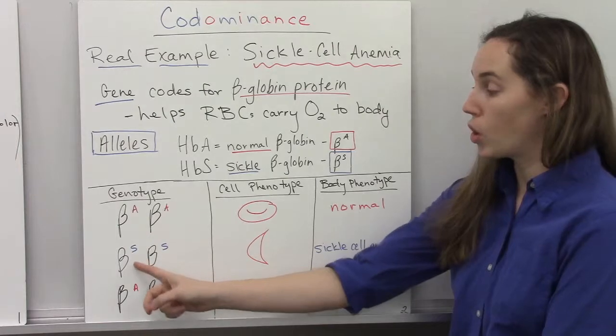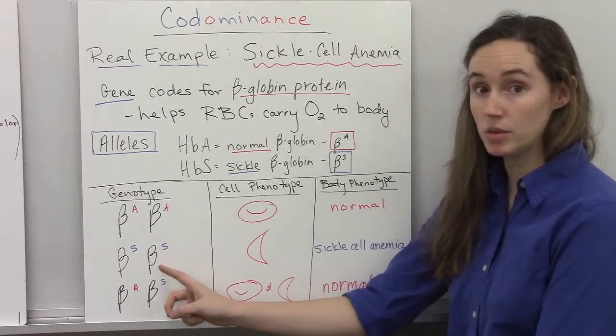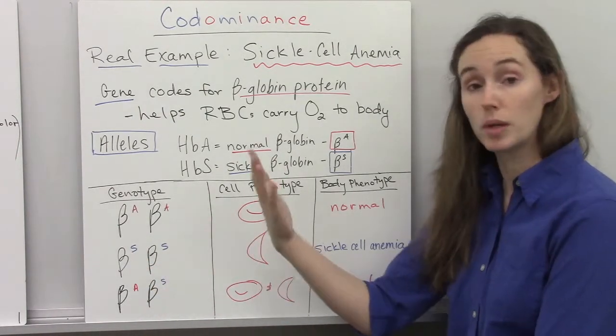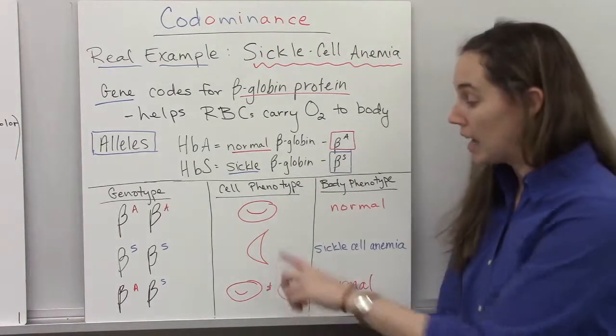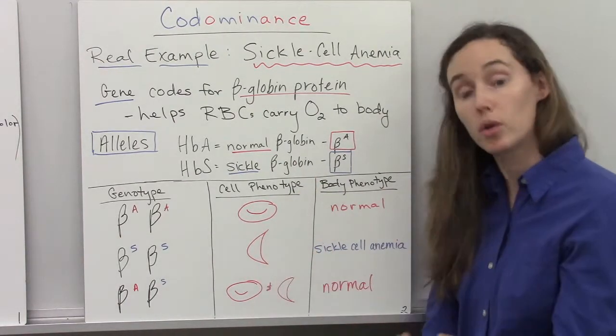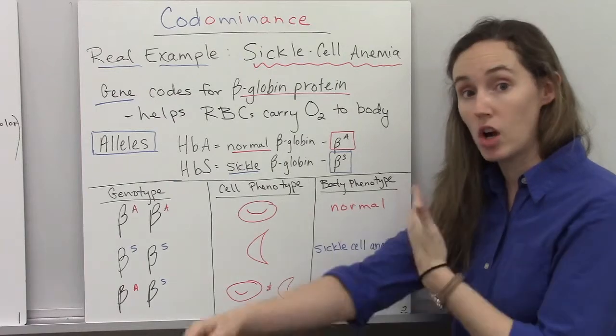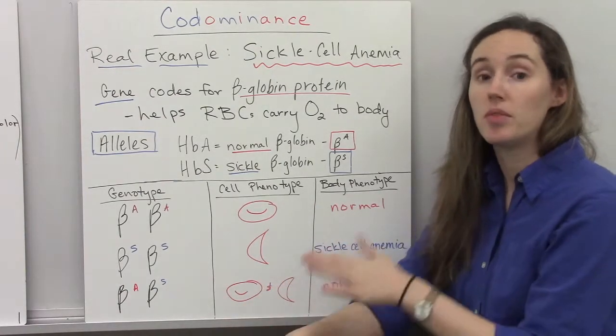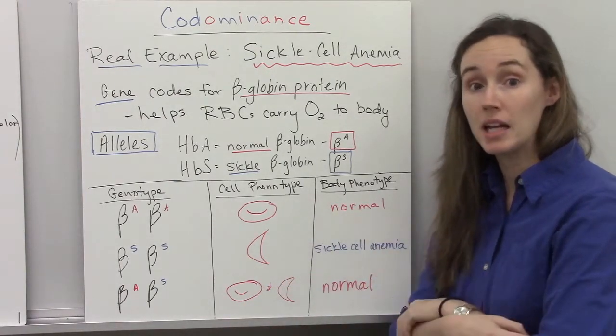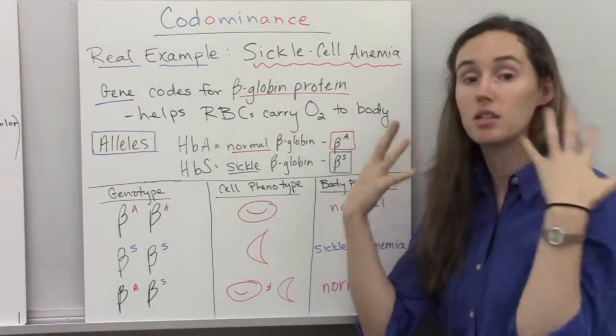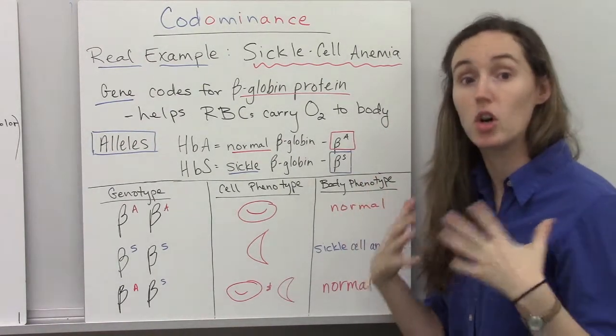If you are homozygous for the sickle cell allele, your red blood cells will be misshapen. And they'll actually look kind of like a half moon or a sickle. This can cause clotting. There are high levels of pain, yellowing of the eyes, fatigue. It's a situation called crisis.